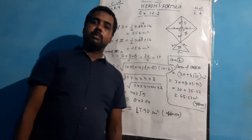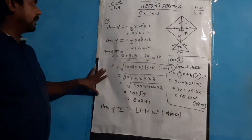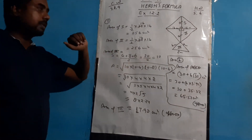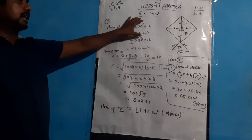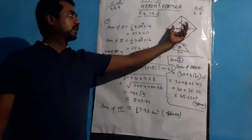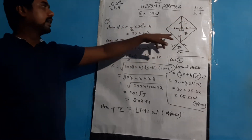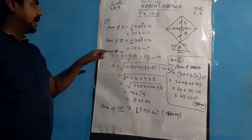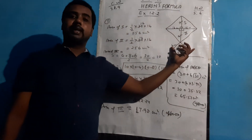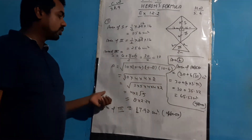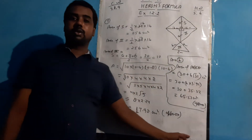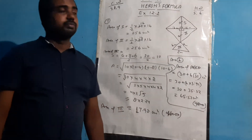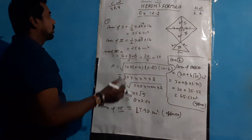To summarize Question 7: for the first part, base was 32 and height was 16, giving 256 cm²; same for the second part. For the third part, an isosceles triangle, I applied Heron's formula and got 17.92 cm².